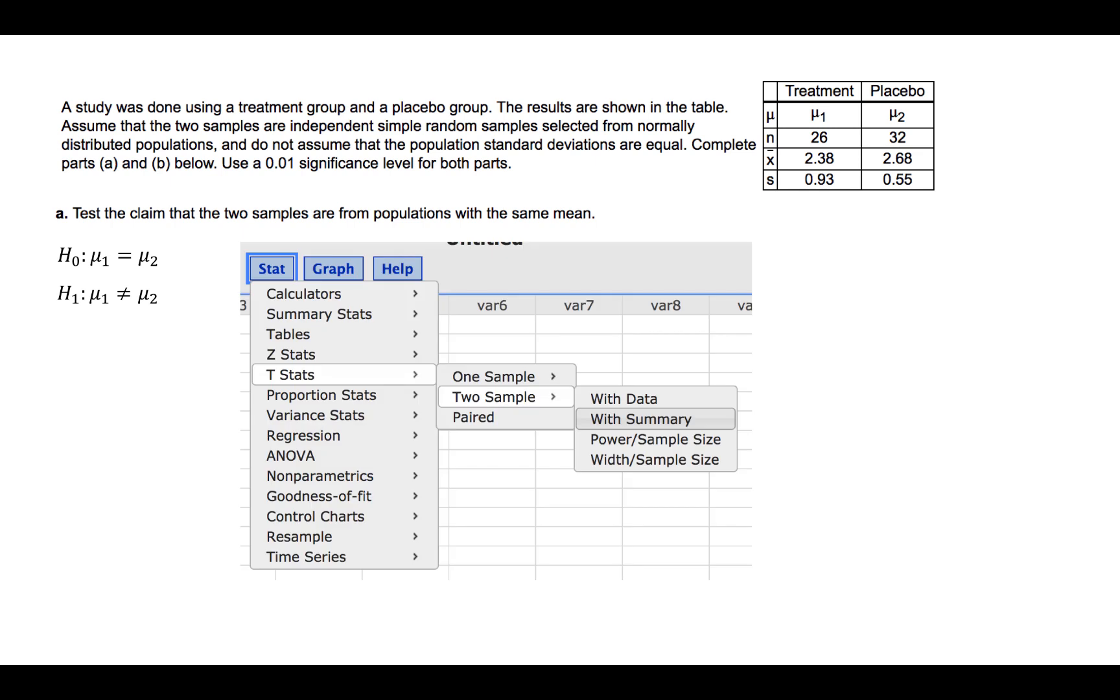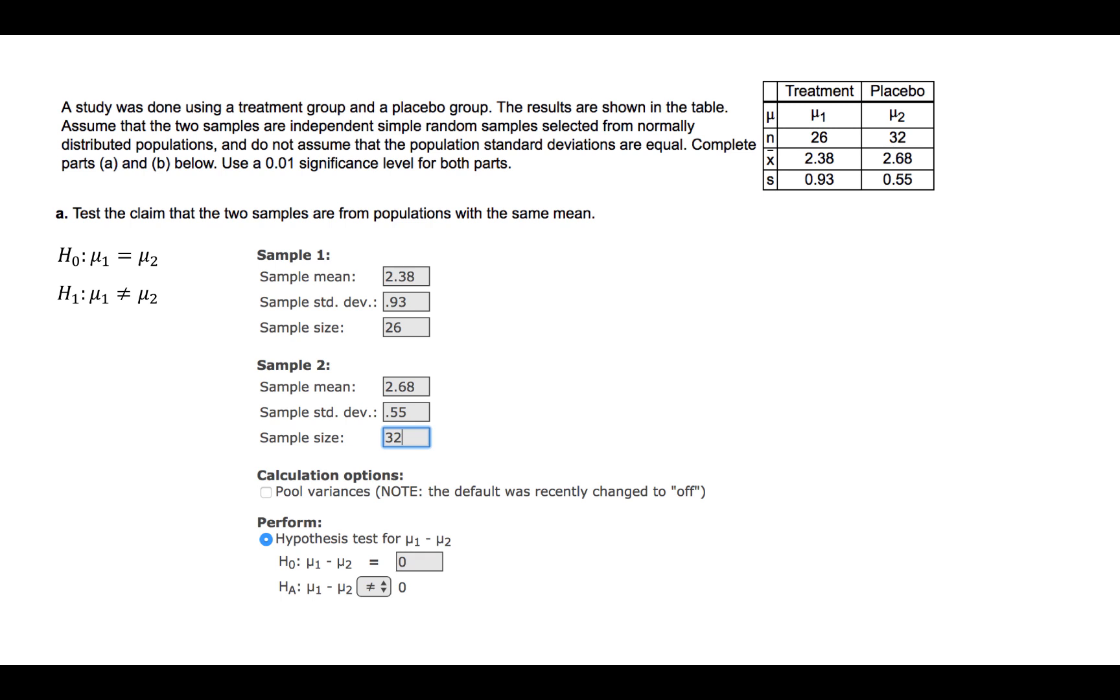We can use StatCrunch to find the statistics for this test by pressing stat, t-stats, two sample, with summary, and then enter the values as we see in the given table.